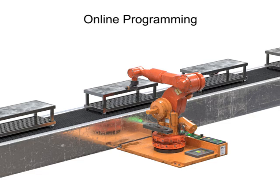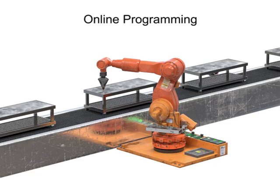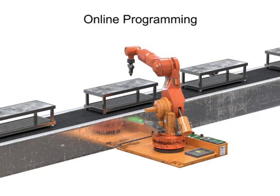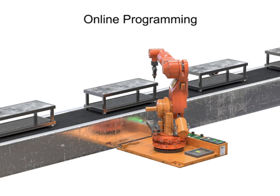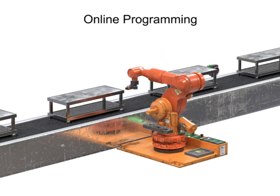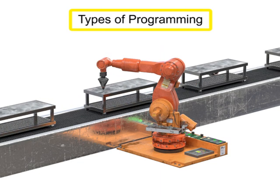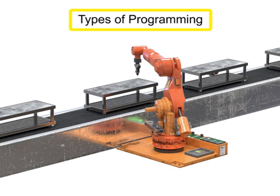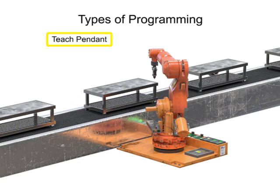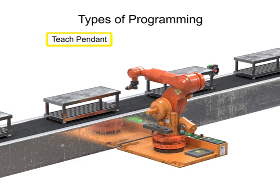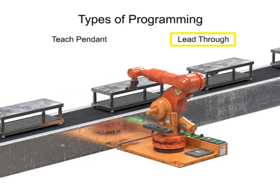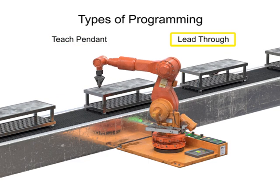Online programming occurs when the robot is online or in an operational mode. The two types of programming we will discuss here are teach pendant programming and lead-through programming.